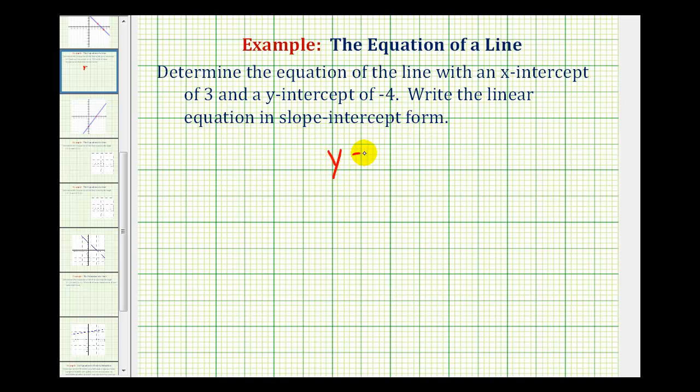Which is the form y equals mx plus b, where m is the slope of the line, and b is the y intercept of the line. There are a couple ways to approach this.